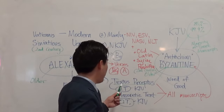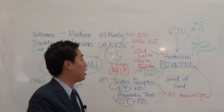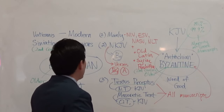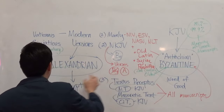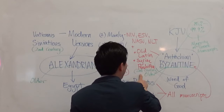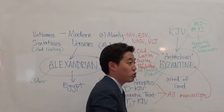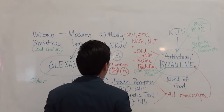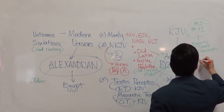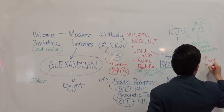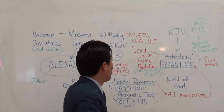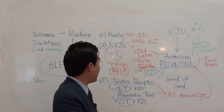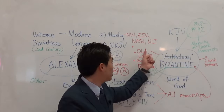The reason scholars prefer a minority of manuscripts is the excuse that they're older. But remember, the Antiochian, Byzantine, and Textus Receptus manuscripts also have older manuscripts. So that argument doesn't hold. Another powerful factor is the church fathers — their statements back up the percentage of Greek manuscripts supporting the Byzantine line.